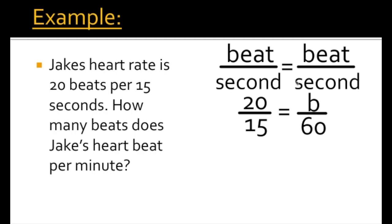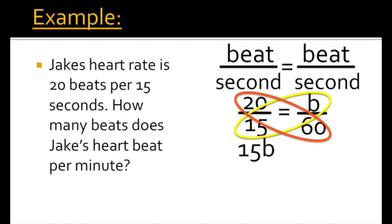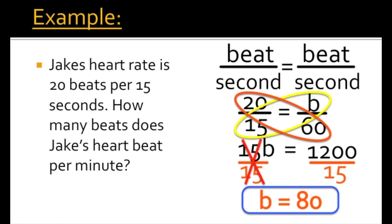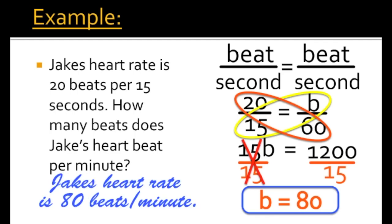Now that we have the proportion, we solve it mathematically using two steps. First, cross-multiply: 15 times B gives us 15B, and 20 times 60 gives us 1,200. So we have 15B equals 1,200. To get B by itself, divide both sides by 15. The 15s cancel, leaving 1,200 divided by 15, which gives us 80. So B equals 80. Relating that back to the word problem: Jake's heart rate is 80 beats per minute.